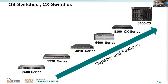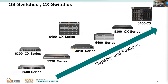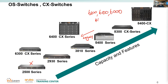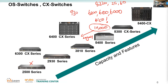Looking at the CX switches: you'll see a mix of CX and legacy models. The legacy ones are being replaced — for example, the 2500 series is being replaced by the 6000 series. We now have 6200, 6100, 4100i, 8320, 8325, 8360, 10000 series — a completely different platform — and the recent 9300 series, with a strong focus on data center and campus edge.